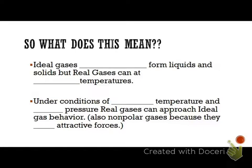So what does this mean for us? It means a couple of things. First of all, in theory, ideal gases cannot form liquids and solids, but real gases can at lower temperatures. The reason they can at lower temperatures is the particles aren't moving as fast, and so they can have a better chance of being attracted to each other because they're moving slower.